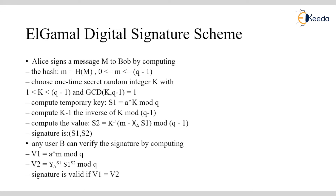Bob, the receiver, can verify the signature by computing two values: v1 and v2. The formula for v1 is a^m mod q, and the formula for v2 is ya^s1 · s1^s2 mod q. If v1 equals v2, then the signature is valid, and this is how ElGamal provides signature validity to the receiver.